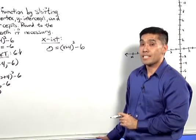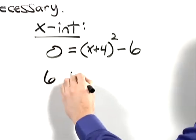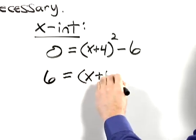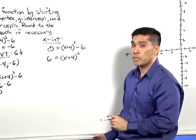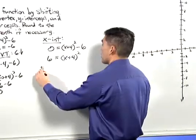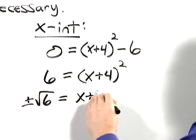So let's add 6 to both sides of the equation. 6 equals x plus 4 squared. Taking the square root of both sides, plus or minus the square root of 6 equals x plus 4.